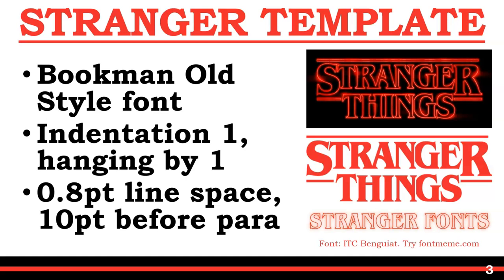I've provided the two official type logos: one from the spooky and intriguing 80s synth music intro to the program, which is red text on a black background, and also the red on white, which is more part of their marketing. For bullet points, use an indentation of one and hanging by one — that means it moves the text away from the bullet point by one centimeter, with all the rest of the text hanging by that same centimeter so everything's aligned. I quite like around 0.8 points line spacing, which you can set in PowerPoint's line spacing options by choosing Multiple, allowing you to use partial values. Around 10 point space before or after the paragraph gives differentiation between bullet points.